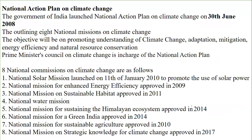The National Action Plan on Climate Change is a plan which was launched on 30th June 2008. This date is also important — they may give questions in the form of match-the-following, so you should know the dates very well. This National Action Plan on Climate Change has eight missions — this question has already been asked in one of the cycles, so you should know there are totally eight missions.